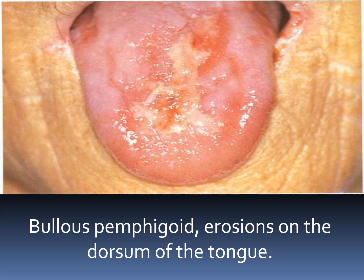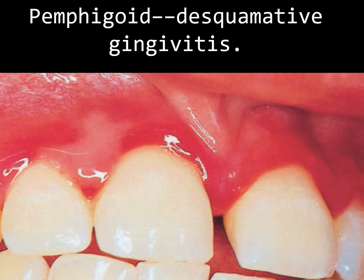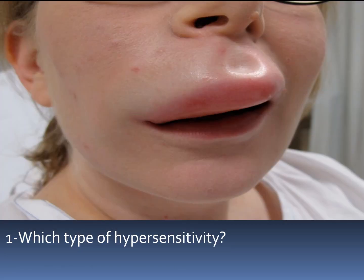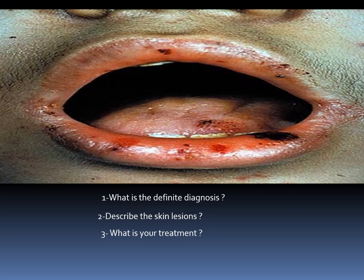Bullous pemphigoid: erosions on the dorsum of the tongue, pemphigoid desquamative gingivitis, and pemphigoid conjunctival lesions. Clinical questions: 1. What is the definite diagnosis? 2. What investigations are required? 3. What is the causative factor? 4. Which type of hypersensitivity?